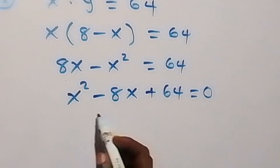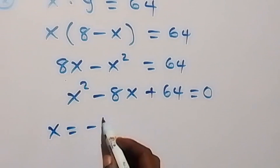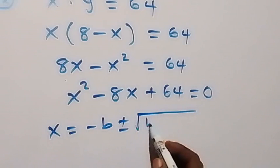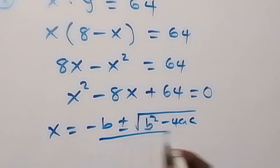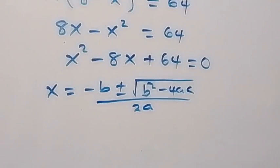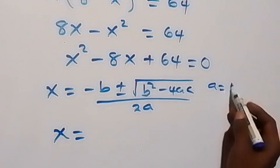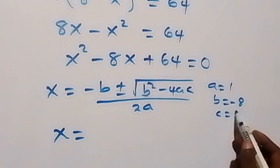We can solve this quadratic equation using the formula: x equals to negative b plus or minus square root of b squared minus 4ac, all over 2a. Here, a is 1, b is negative 8, and c is 64.